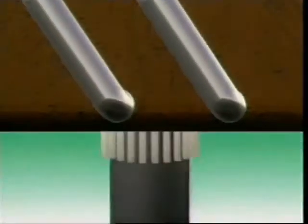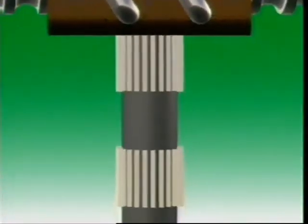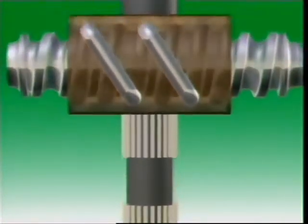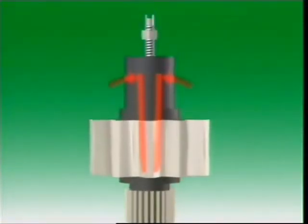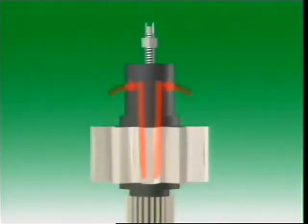The pitman shaft is supported by two caged needle roller bearings in the steering box housing. The sector teeth are angled and an adjustment screw on the steering housing cover provides proper engagement of the sector gear and nut teeth.